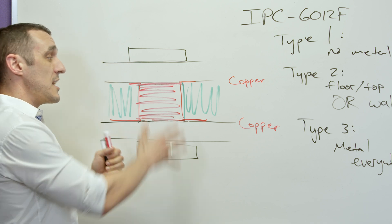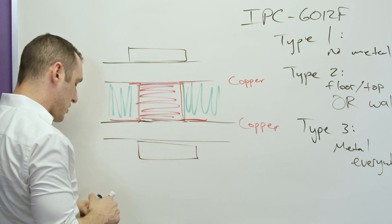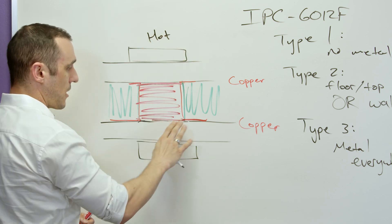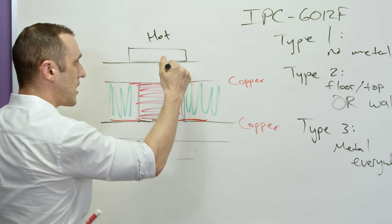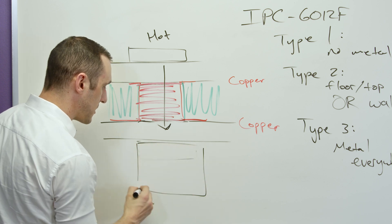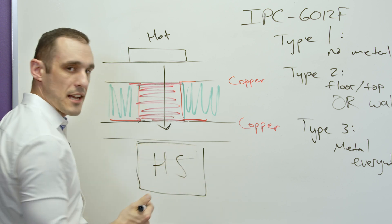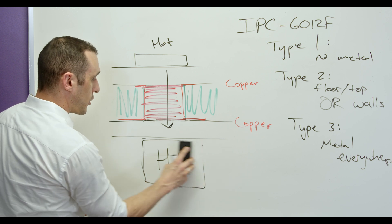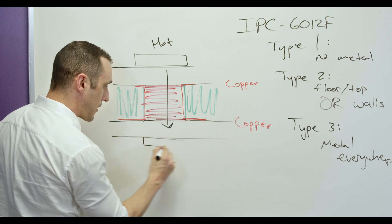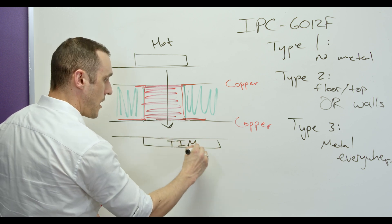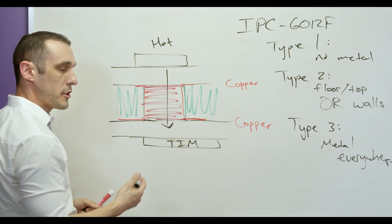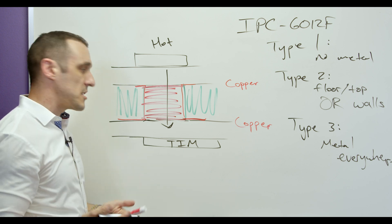Instead of insulating two components from each other, with this type 3 structure you might have a hot component on top, and then this embedded copper structure would allow you to conduct heat through the substrate to a heat sink mounted on the bottom side of the board. Or instead of a large heat sink, you could use a thermal interface material — a very thin layer that bonds to your enclosure — and suck heat directly into the enclosure via that thermal interface material.